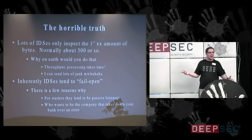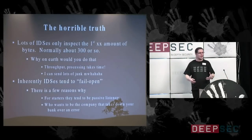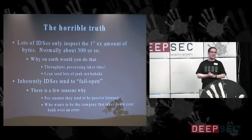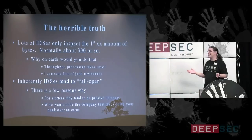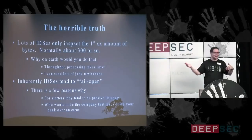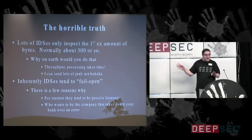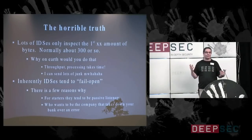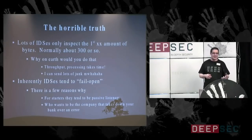The horrible truth, bearing in mind we talk about speed and throughput: most IDS vendors, from our experience, will normally only inspect the first 300 bytes of payload. Obviously they think everything they need to know will be in the first 300 bytes. We could use HTTP self-referencing tricks to stick in a 300-byte directory name that gets resolved before it even reaches the endpoint — just junk data for the IDS to deal with. IDSs are inherently fail-open, because they are a passive aspect of a network.